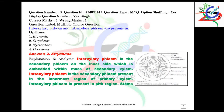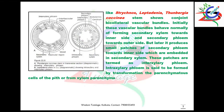Question number five: intramedullary phloem and extramedullary phloem are present in which plant? Intramedullary phloem is found only in Tecoma stems, but both intramedullary and extramedullary phloem are found in Strychnos. Apart from Strychnos, two other plants — Leptadenia and Thunbergia coccinea — also have both intramedullary and extramedullary phloem in their stem anatomy. The structures are given here.